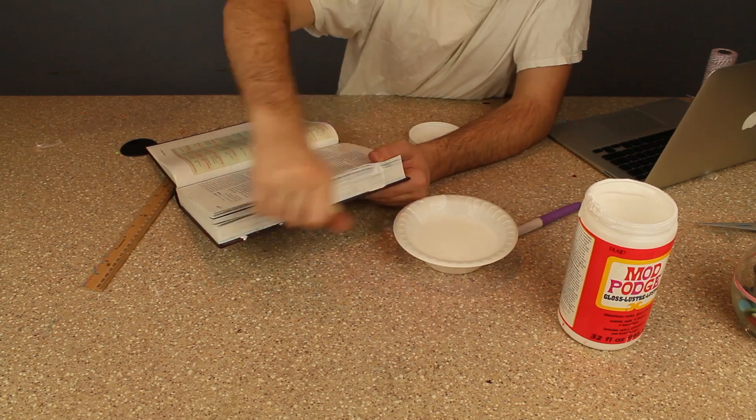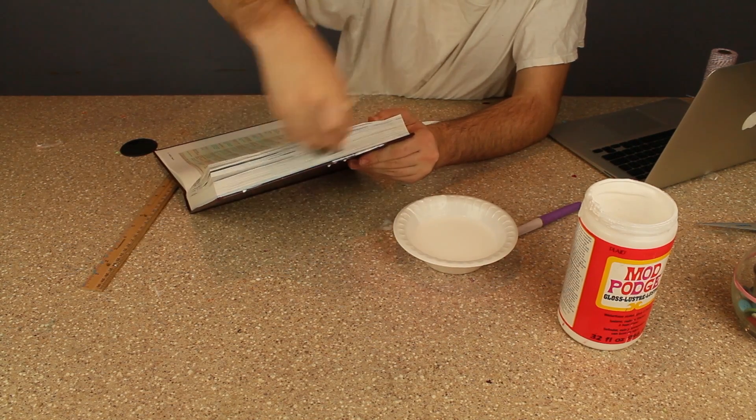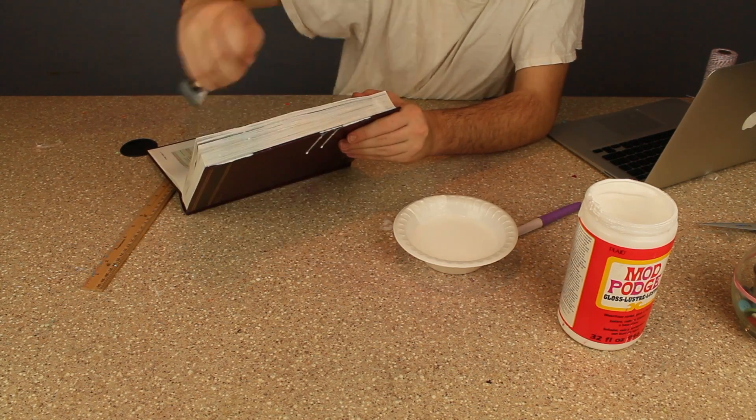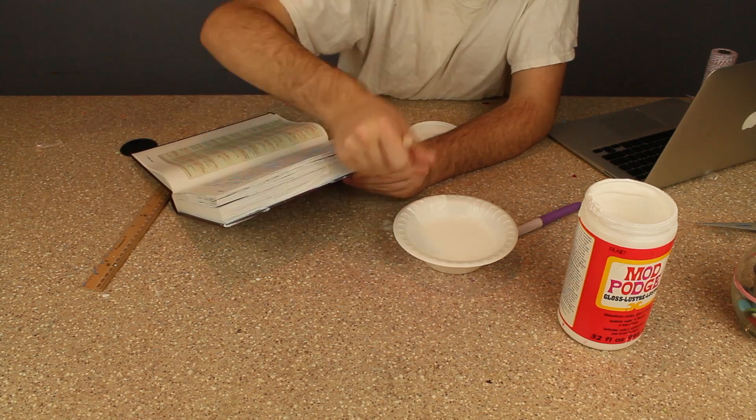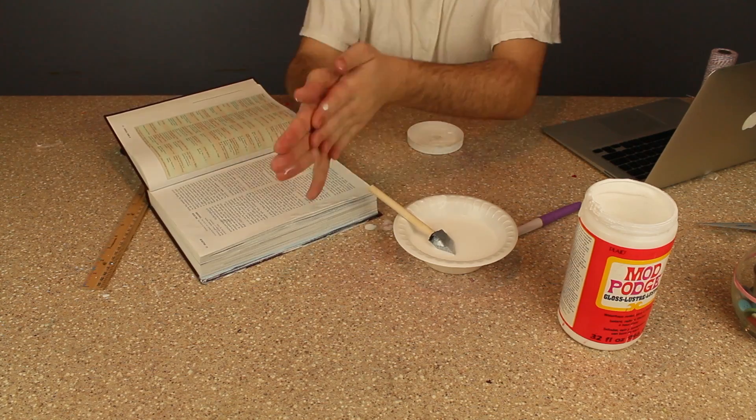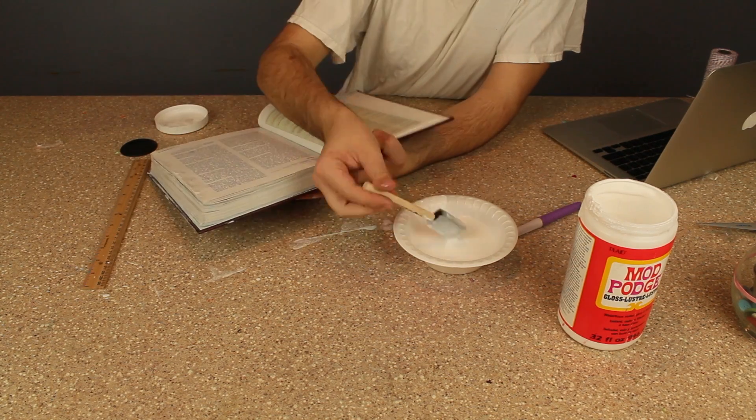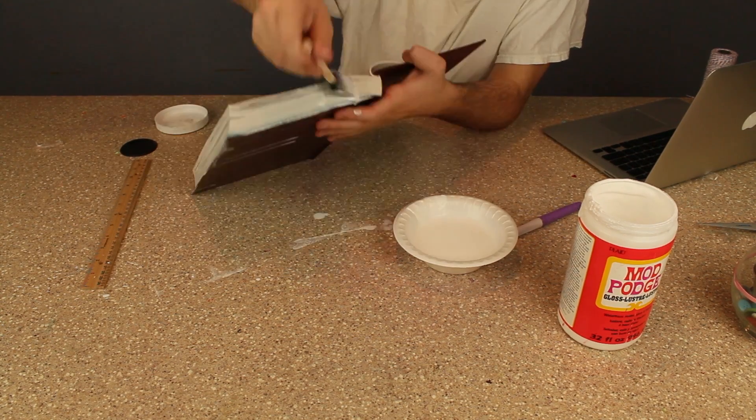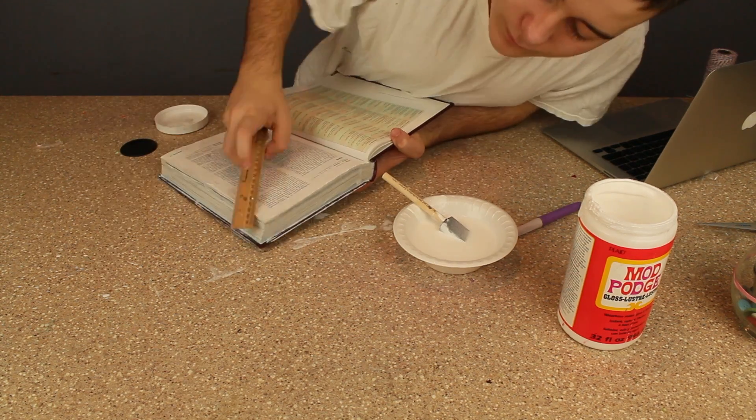After you stir that together, you want to just start putting it on your book. Now I thought I would do a section at a time. It turned out that it dries and sticks a lot quicker than you would imagine. So just stick it all together, don't do the mistake I did, and make sure you're getting even coverage.